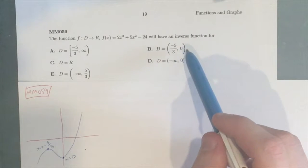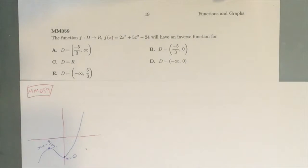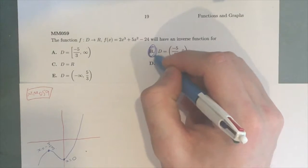B is -5/3 to 0, which is from here to here, which is actually what we want. So this would create a one-to-one function, which means that the inverse function would exist, and we'd have an inverse. So B is our answer, -5/3 to 0.